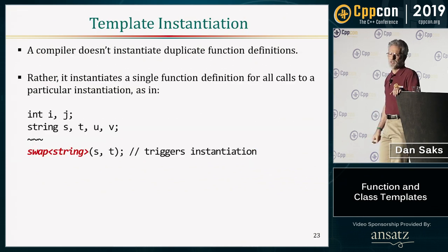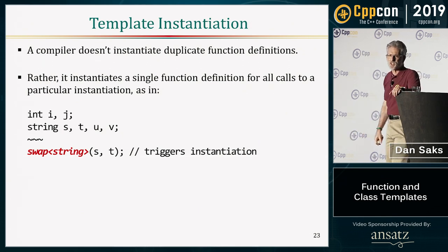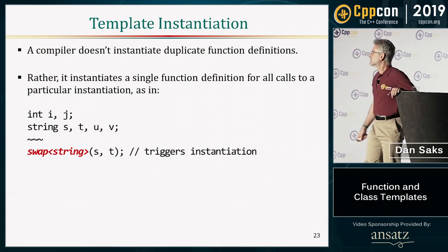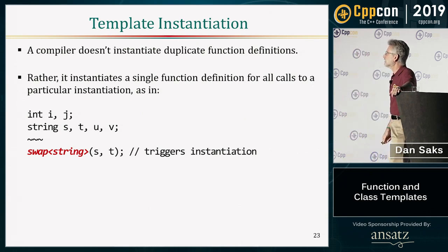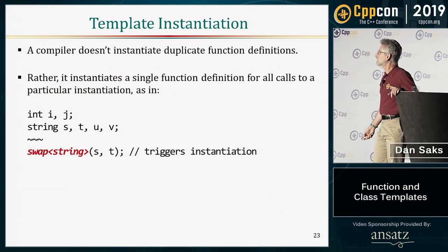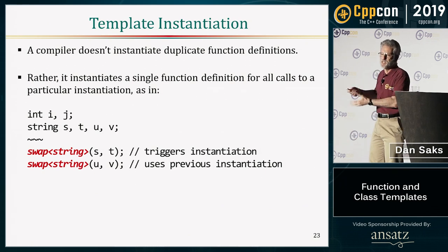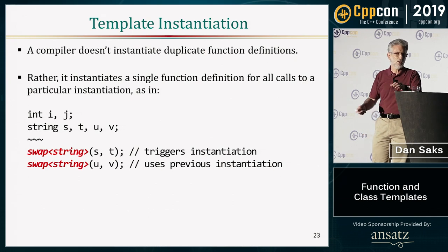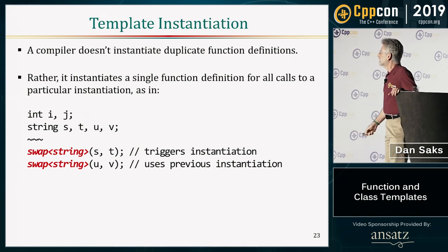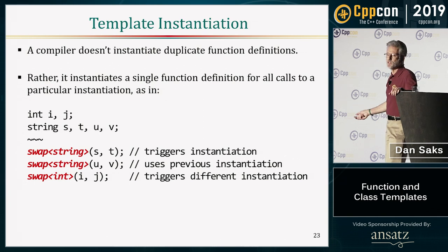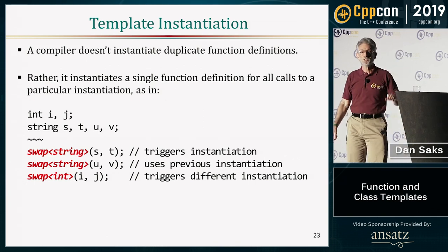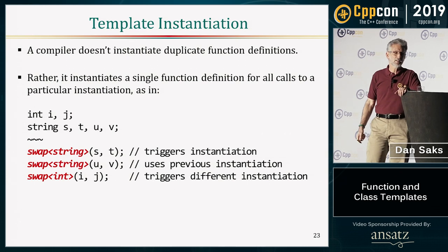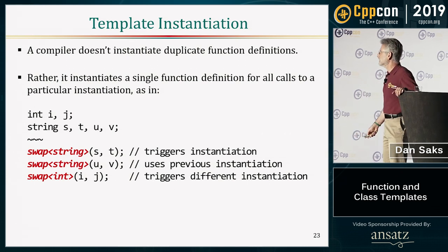The compiler doesn't instantiate duplicate copies unnecessarily. If I call swap<string> to swap strings s and t, that triggers an instantiation. If I then call swap<string> with two different strings, there's no need to instantiate another function — they'll both call the same one. But if I then try to swap two integers, that's a different type, so it triggers a different instantiation.